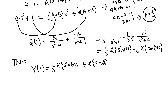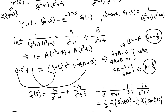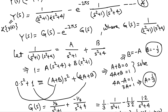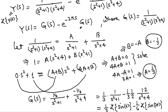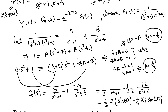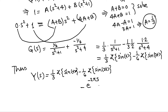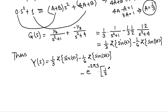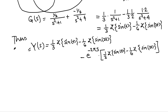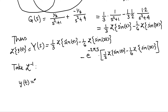Writing out Y(s) fully: Y = (1/3)·Laplace{sin(t)} − (1/6)·Laplace{sin(2t)}, for the first part, minus e^(−2πs) times the same bracket [(1/3)·Laplace{sin(t)} − (1/6)·Laplace{sin(2t)}]. Since uppercase Y is Laplace of lowercase y, we take the inverse Laplace of both sides to recover our solution y.